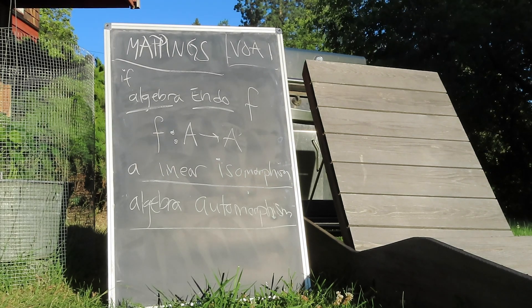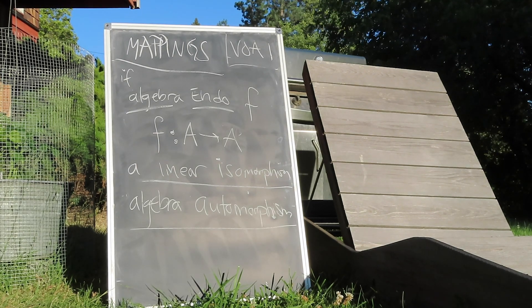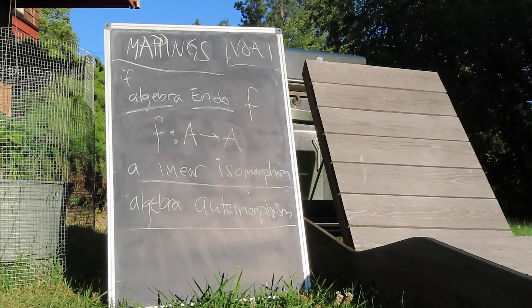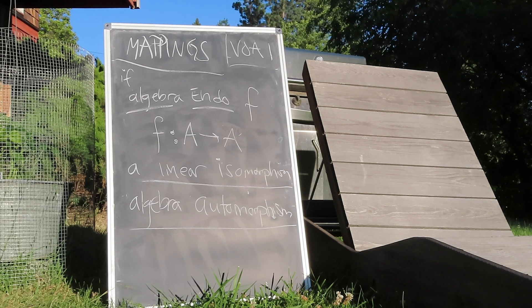An algebra endomorphism that is also an algebra isomorphism is called an automorphism. Automorphisms, again, both of linear and algebraic type, are crucial for understanding symmetries.